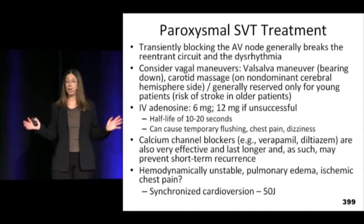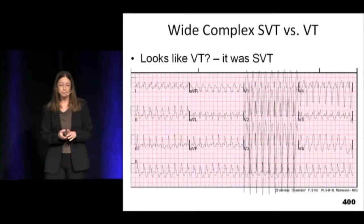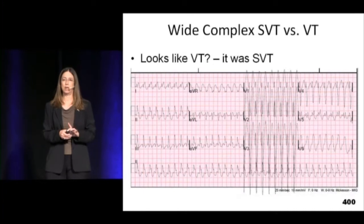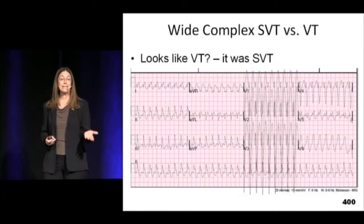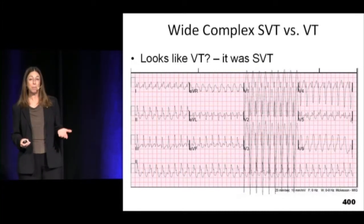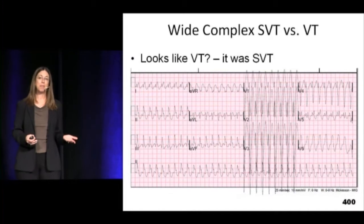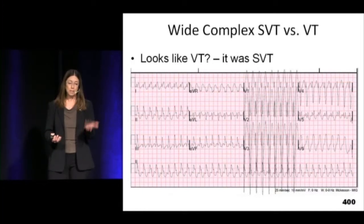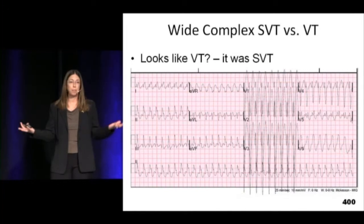Warn patients that adenosine is going to make them feel really weird and may cause chest pain — you're essentially shutting down the system and rebooting. Some people really hate it and will refuse it next time. You can also slow people down with calcium channel blockers like verapamil, but it doesn't break the rhythm as well as adenosine. If they're unstable at any time, they get cardioverted electrically. If you're handed a wide, fast, regular rhythm and the patient is unstable, you're going to shock them — whether it's SVT with aberrancy or ventricular tachycardia. If they're stable, you can try adenosine and see what happens.